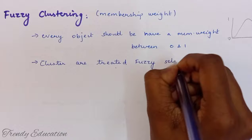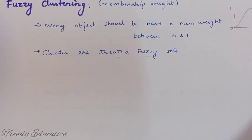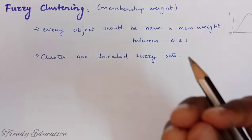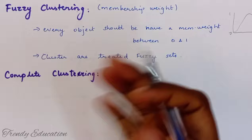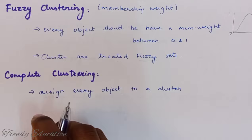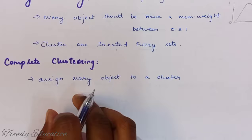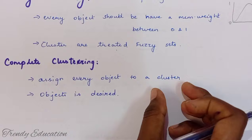Fuzzy means it's not clearly determined — for example, we can classify people as poor, very poor, high, very high, and so on. Now coming to complete clustering: each and every object in the data set will have a cluster — not even one data object is left. Every object in the data set will be clustered into one of the cluster sets. The objects are considered desired because there is not even a single data point left unclustered.